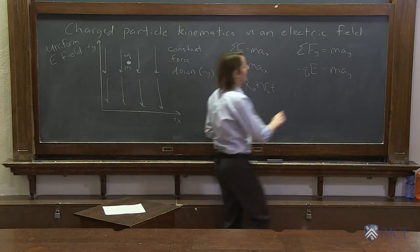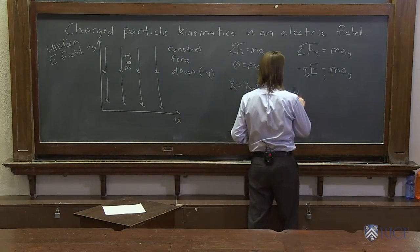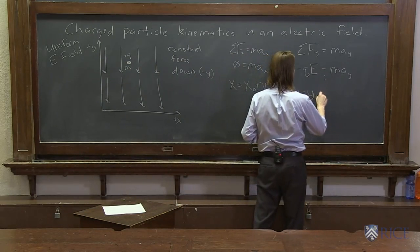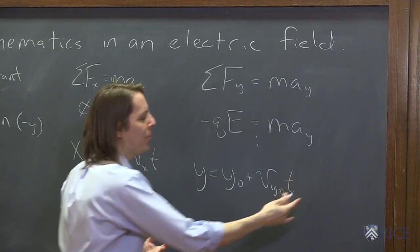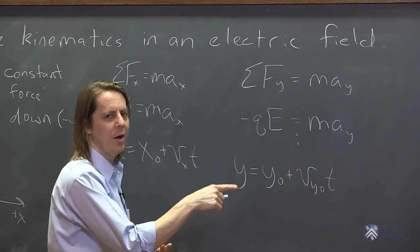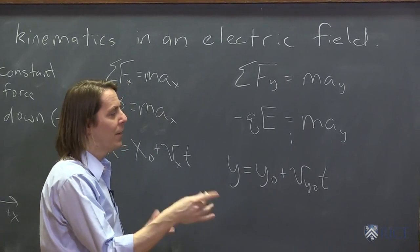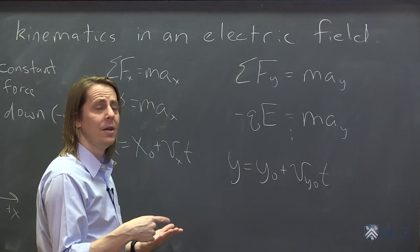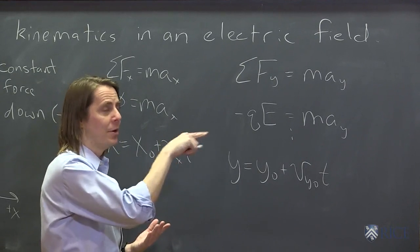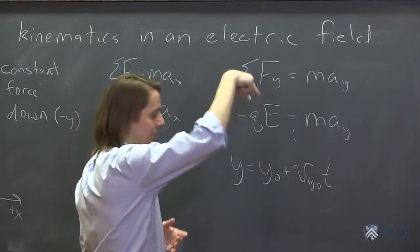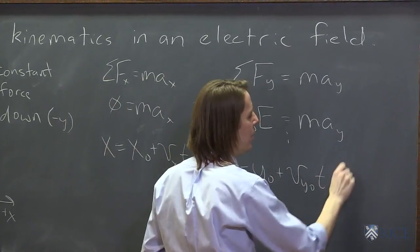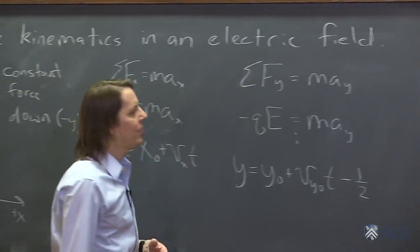And that would lead to kinematics equations. You may recall that y equals y naught plus v y naught t. And then you might write it plus one half a y t squared. Or you might write in the real acceleration. When you're doing gravity, you wrote minus one half g t squared, because g is down. Here, you would also write minus, because it's down. So you'd say it's minus one half, and you need the acceleration.